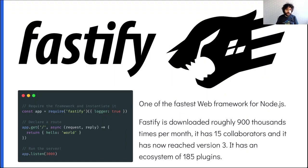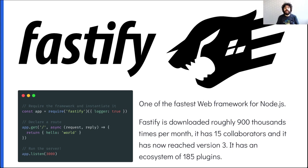Fastify is one of the fastest web frameworks for Node.js. You can require or import it — it works both ways. You can call it with a logger or other options, then declare your routes using async/await. Just return an object and it will convert to JSON. Fastify has been under massive growth, now reaching 900,000 downloads per month and on track to reach a million. It has 15 collaborators, has reached version 3, and has an ecosystem of 185 plugins. We are going to ship V4 soon.